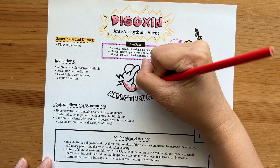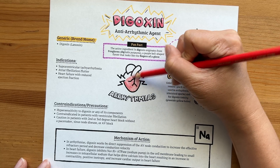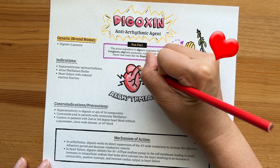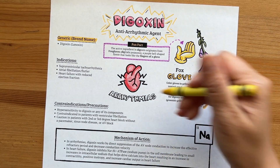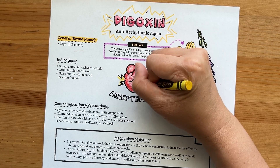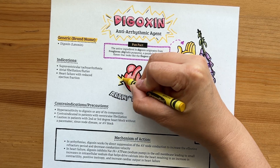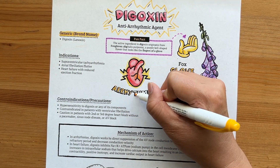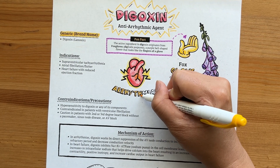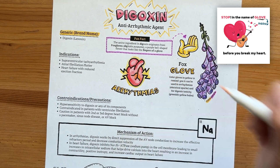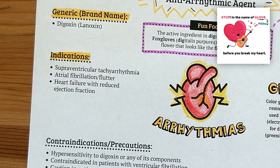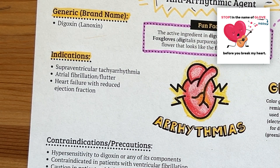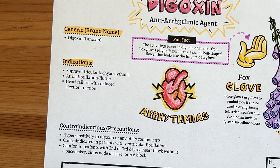Digoxin is used for heart diseases such as supraventricular tachyarrhythmia — a fancy term meaning irregular heartbeats that occur above the ventricle or chambers of the heart. It is also used for atrial fibrillation and flutter, and heart failure with reduced ejection fraction.